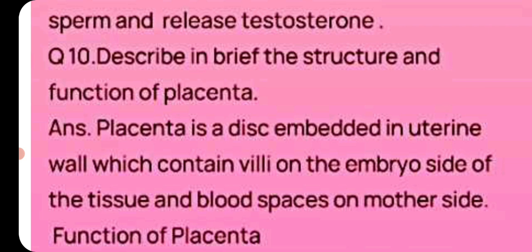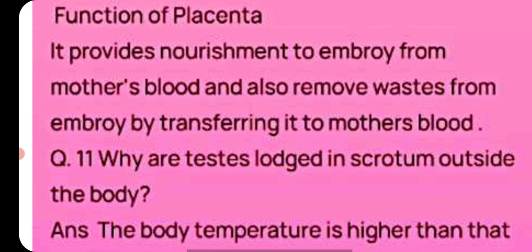Describe in brief the structure and function of the placenta. The placenta is a disc embedded in the uterine wall which contains villi on the embryo side of the tissue and blood spaces on the mother's side. Function of placenta: it provides nourishment to the embryo from the mother's blood and also removes waste from the embryo by transferring it to the mother's blood.